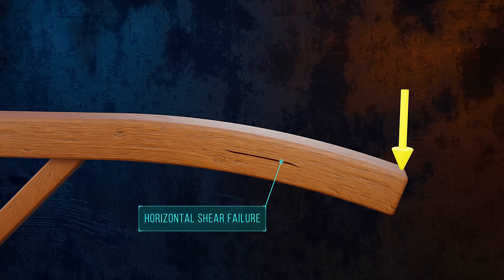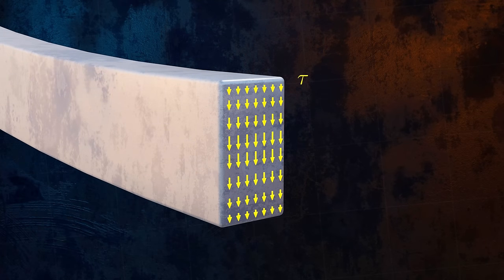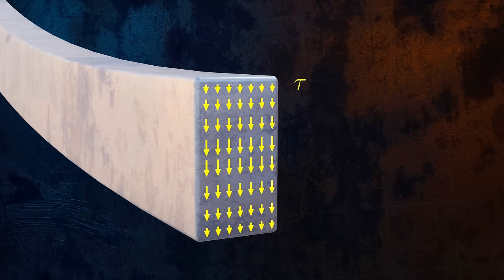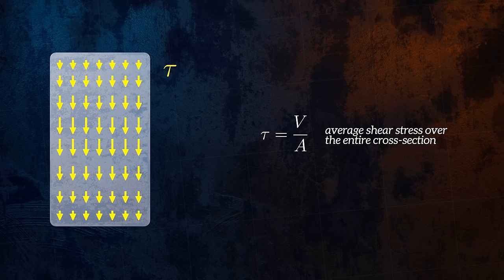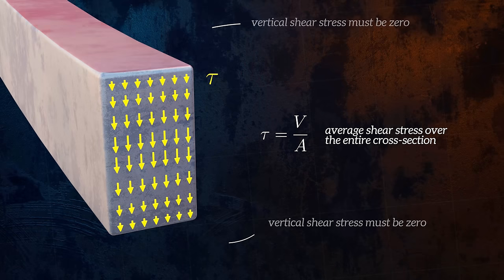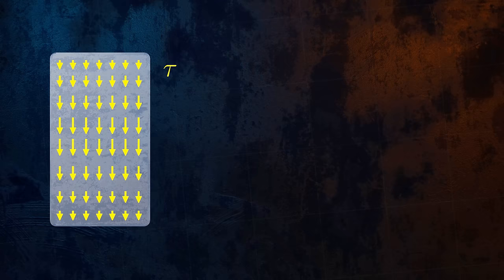So how can we calculate the shear stresses? We can calculate the average shear stress acting on the cross section as the shear force V divided by the cross sectional area. But the shear stresses aren't distributed uniformly across the beam cross section. The shear stress has to be zero at the free surfaces, at the top and bottom of the beam. So the average shear stress isn't very useful, since it doesn't tell us the maximum shear stress. Instead, we can use this equation to calculate the shear stresses acting on the cross section.